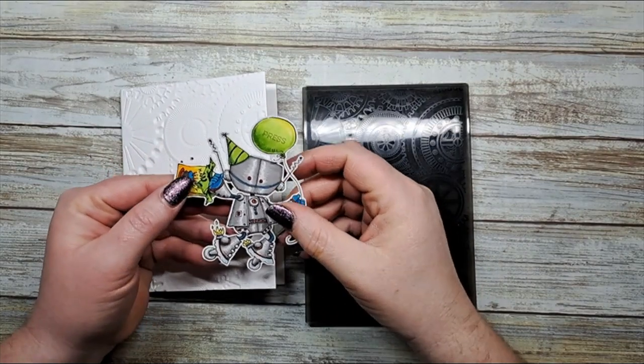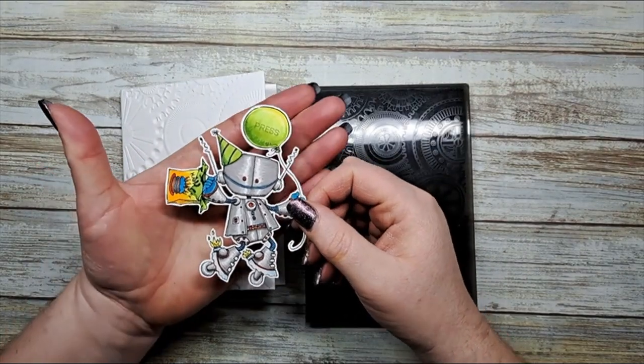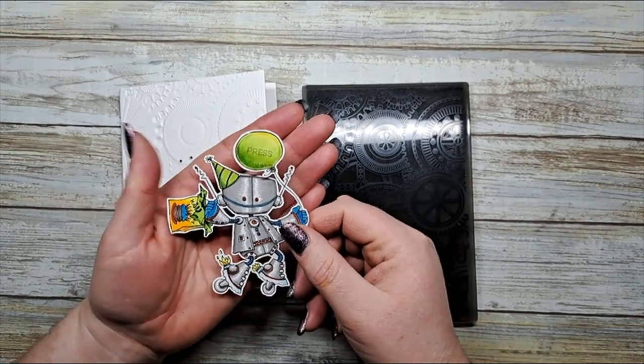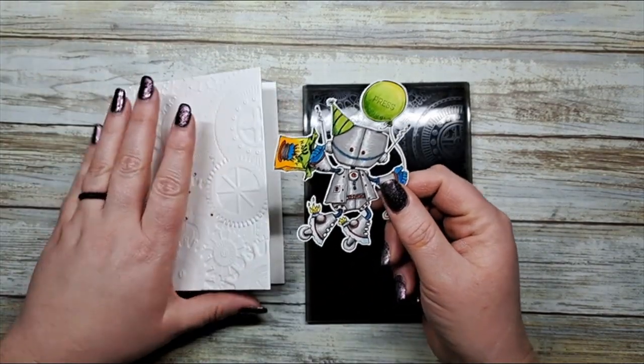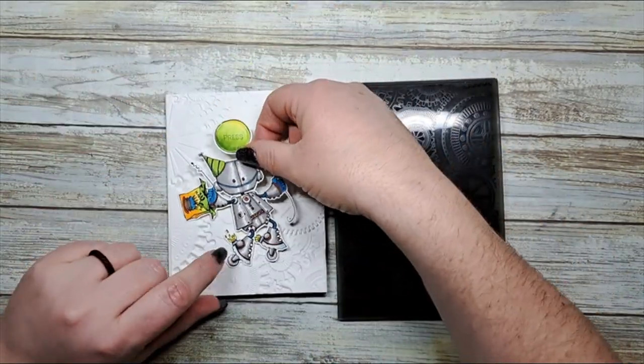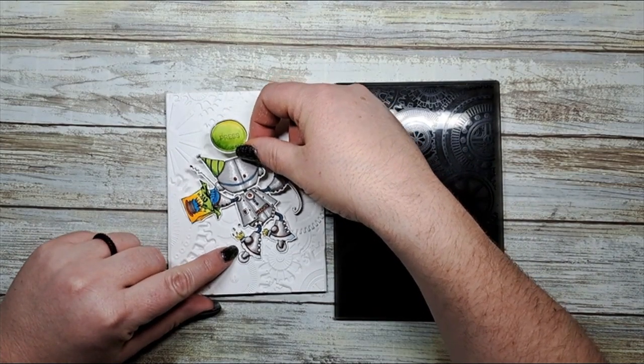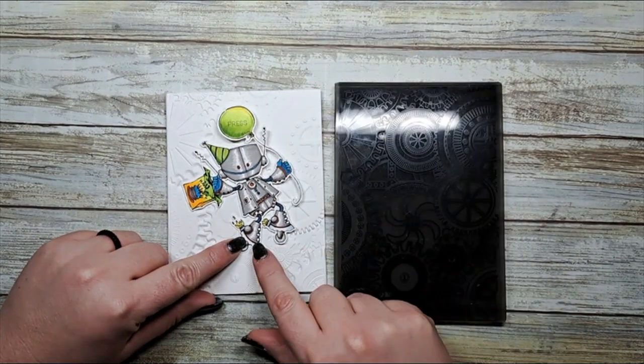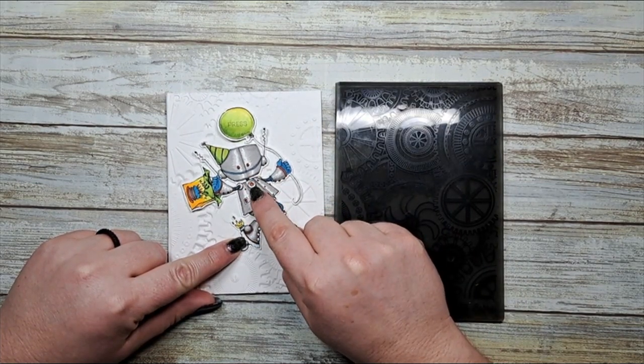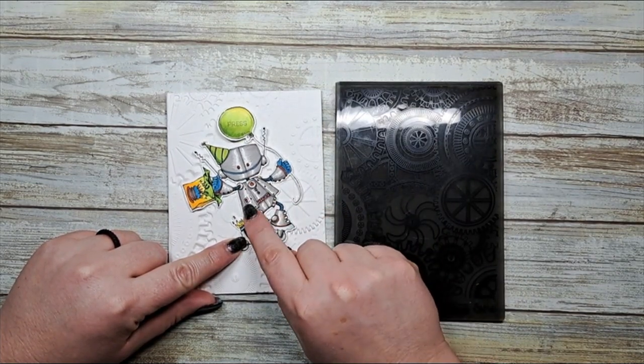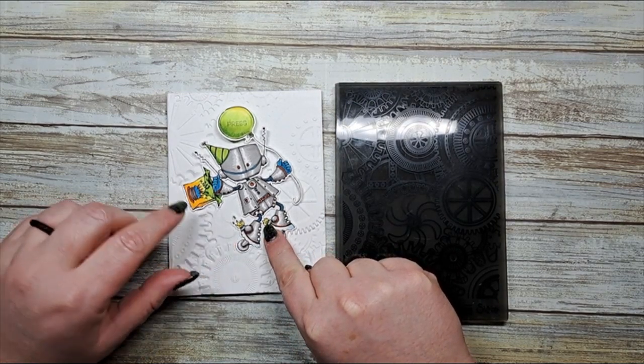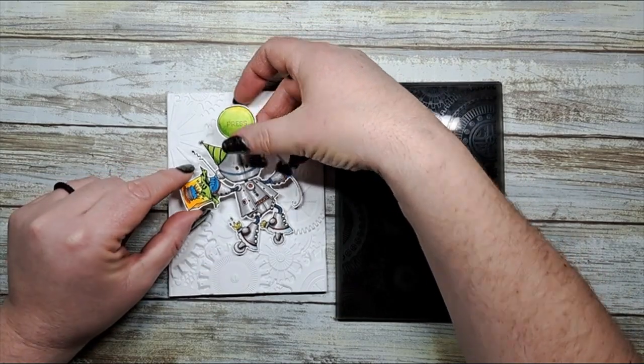I've already begun preparing my card by printing out a digital image, colored it up with some Copic markers, and I've already made my card base in which my circuit is going to be made. I've found a nice position for our little robot birthday dude here and I want his lights to light up - this little piece like a heart, the little switch, and the two cute little fireballs coming out of his feet.